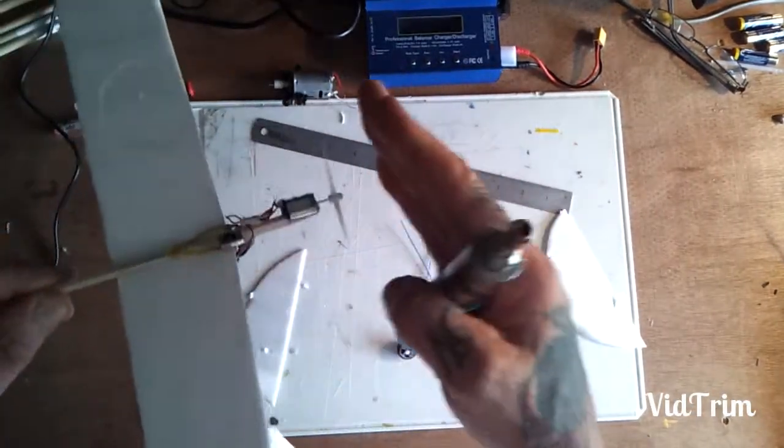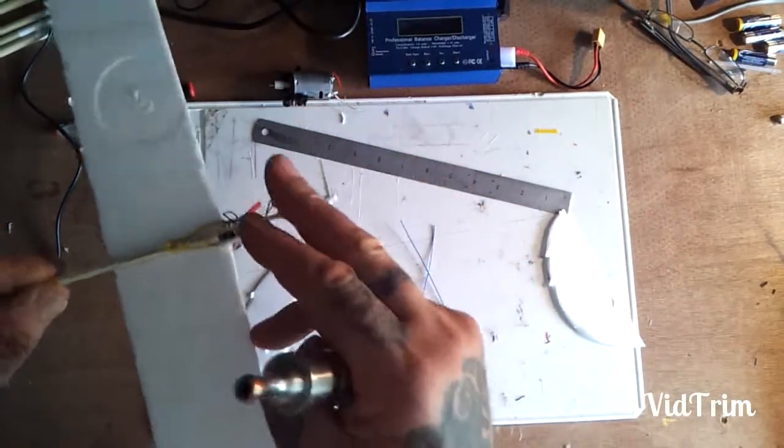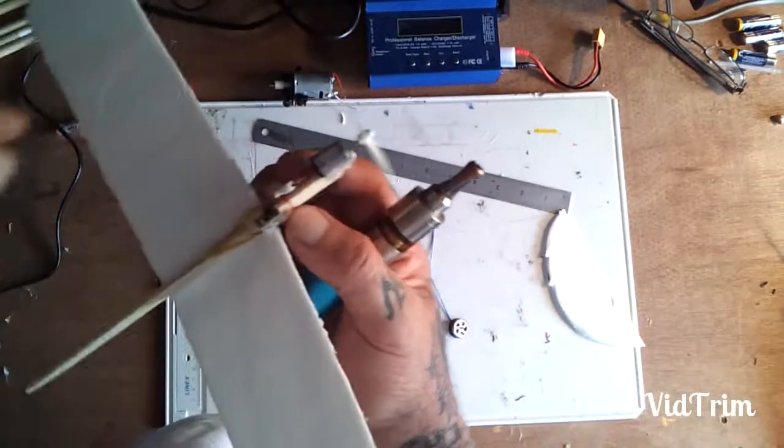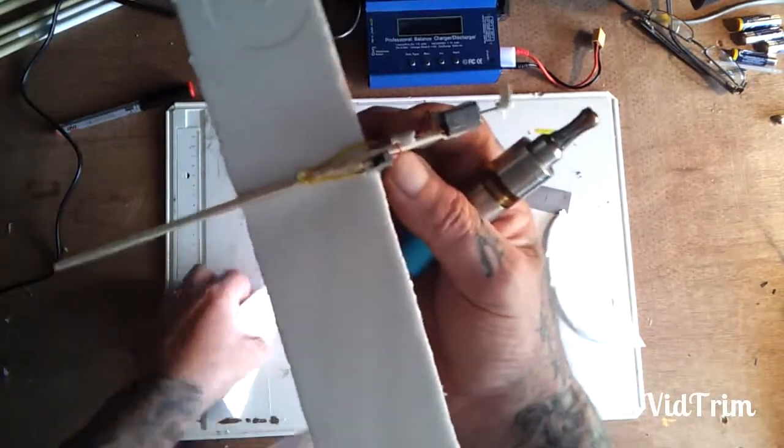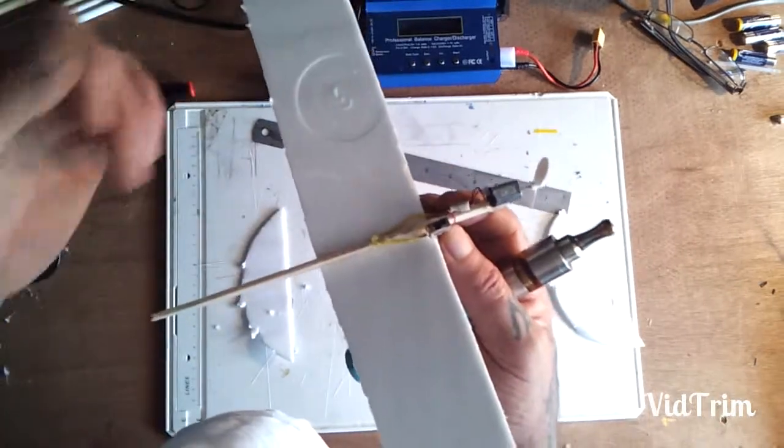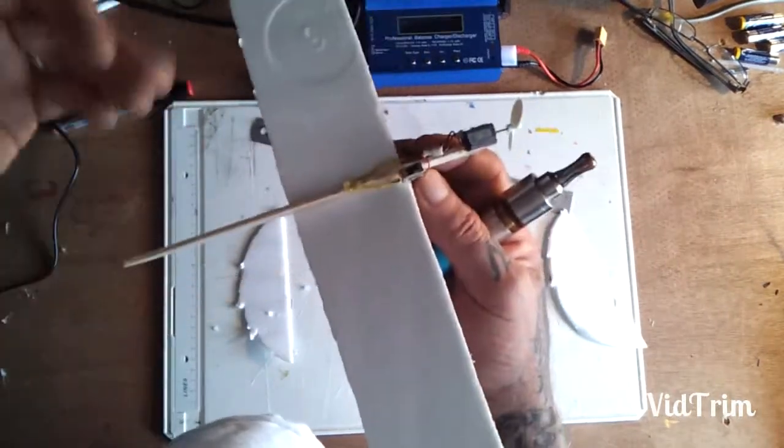In the next part of the video, I'm going to be making some tail wings and a rudder, and I'm hoping I might put a set of flaps in this.